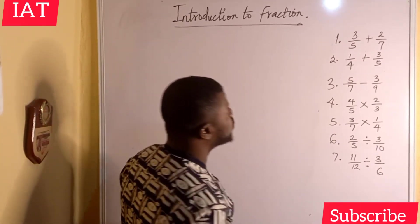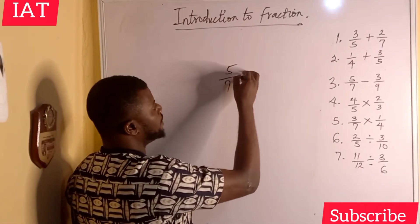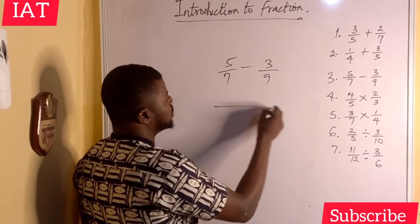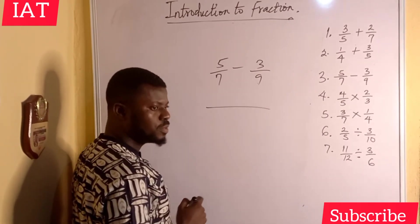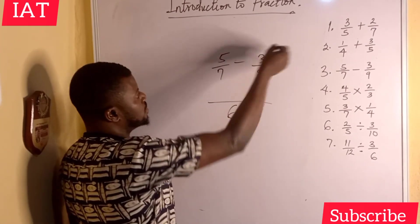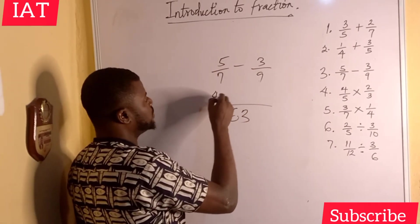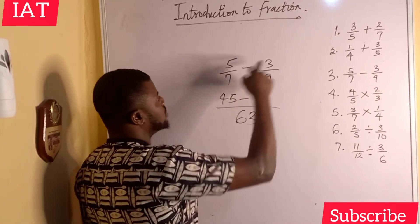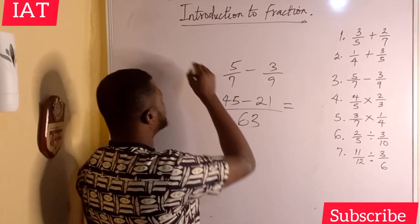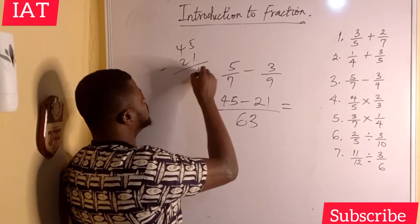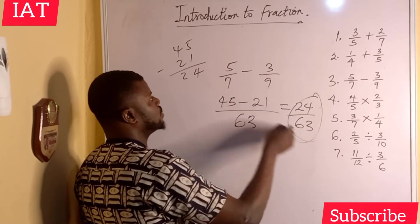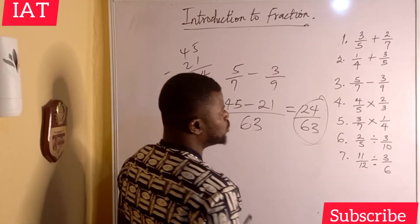Subtraction works almost the same as addition. For example, five over seven minus three over nine: first multiply the denominators — seven times nine gives 63. Then use the diagonals: five times nine gives 45, and three times seven gives 21. So 45 minus 21 gives 24, and the answer is 24 over 63.